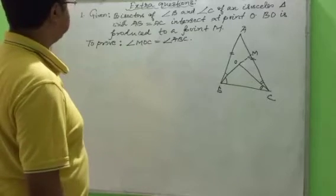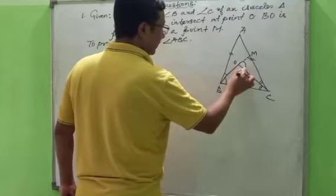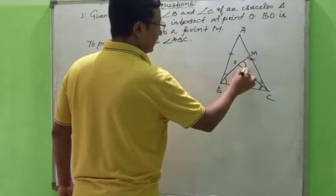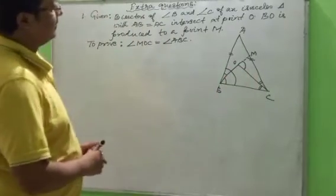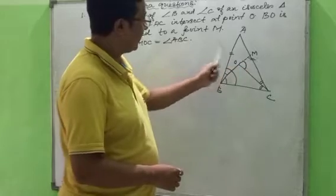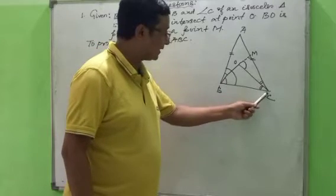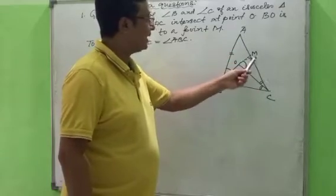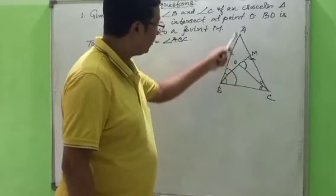Now here they have given: you have to prove angle MOC equals angle ABC. So this angle MOC should equal angle ABC. In the isosceles triangle ABC, AB equals to AC, and the bisectors of angle B and angle C meet at point O. BO is produced to meet side AC at M. Prove angle MOC equals angle ABC.